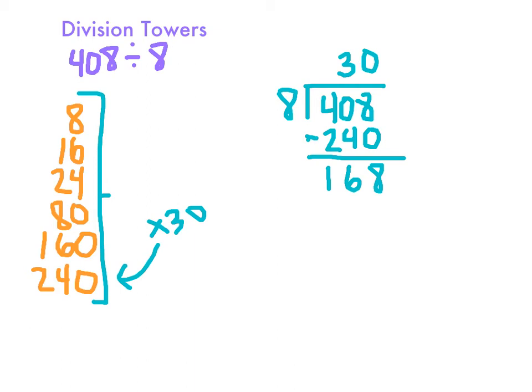Then again, I look at my multiple tower and I see 160 is really close to 168, so I'll put that down here. Eventually we're going to subtract, but first I need to figure out how I got from 8 to 160. Looking at my multiple tower, I did times 20, so I'll take that times 20 and put it on top of the 30.